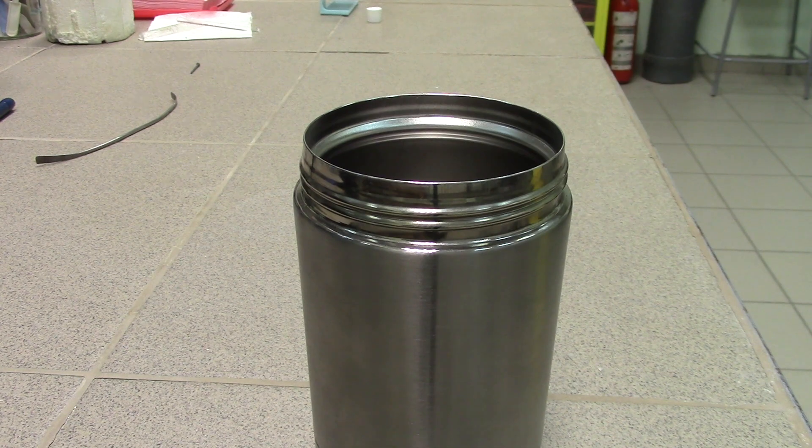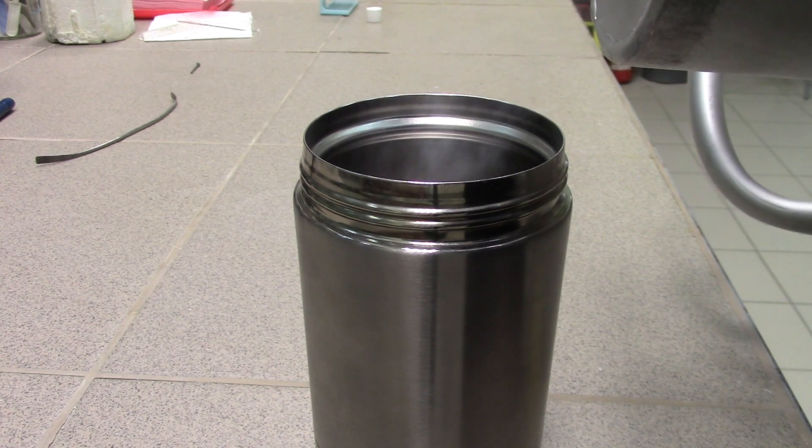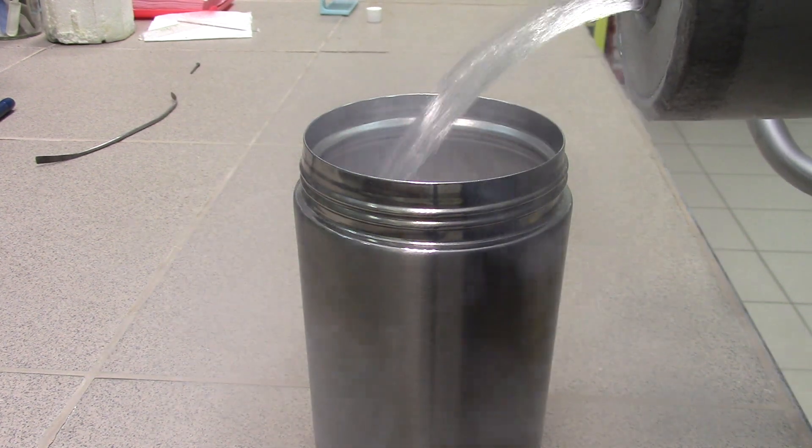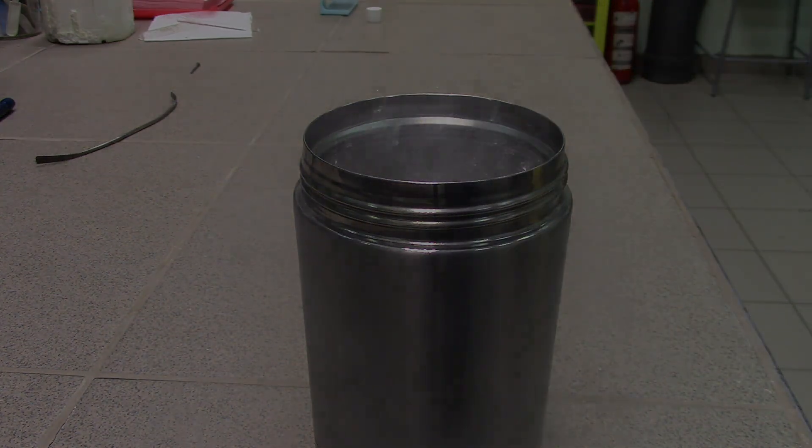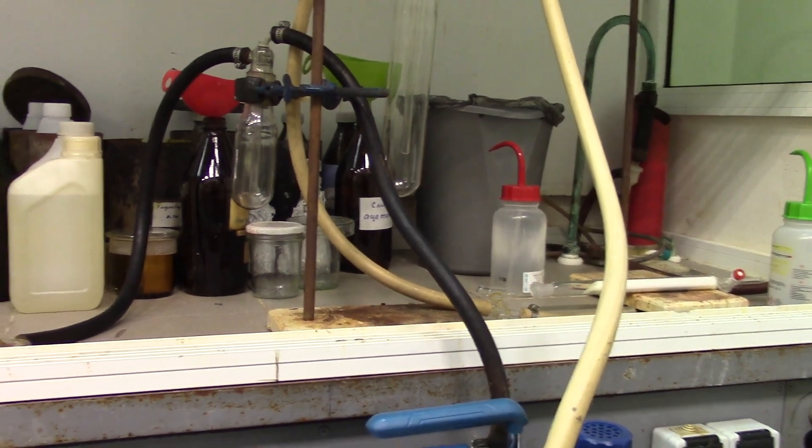Further we need a thermos of liquid nitrogen for trap which prevents a vacuum pump from moisture and fumes. Now let's go to set up the whole construction.